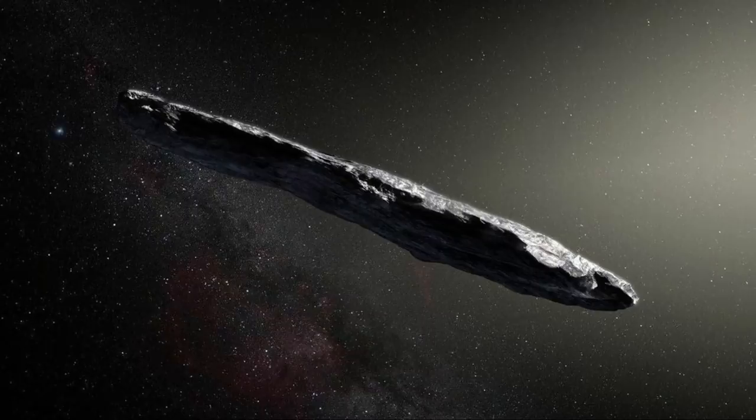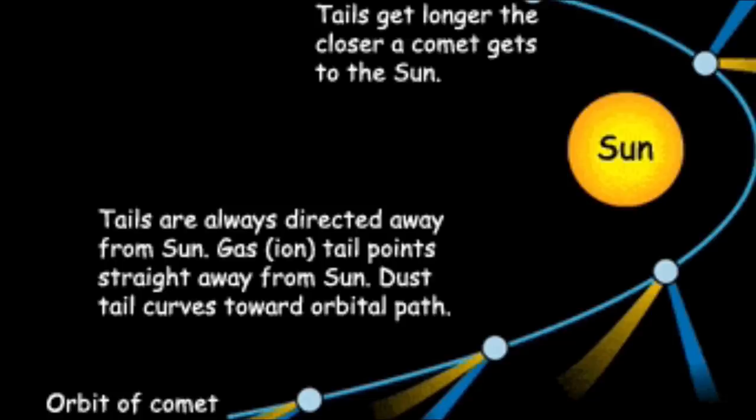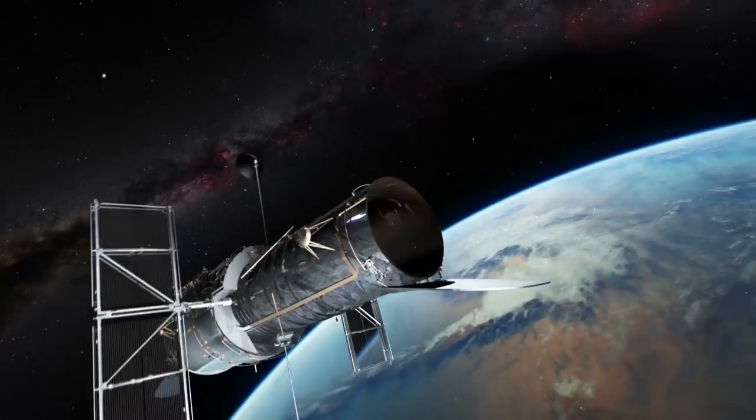New comets are always unpredictable, said Max Mulcher, another member of the observing team. They sometimes brighten suddenly or even begin to fragment as they are exposed to the intense heat of the sun for the first time. Hubble is poised to monitor whatever happens next with its superior sensitivity and resolution. Despite the time frame constrictions, the various space teams around the world are trying to secure more time so they can learn more about 2-Eye Borisov before it's too late.